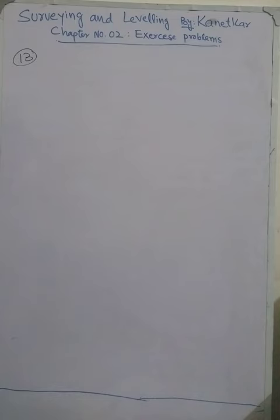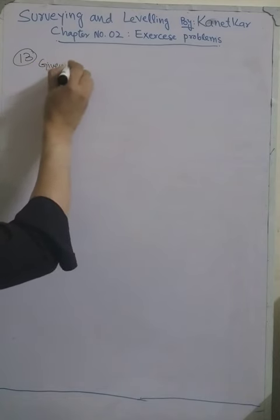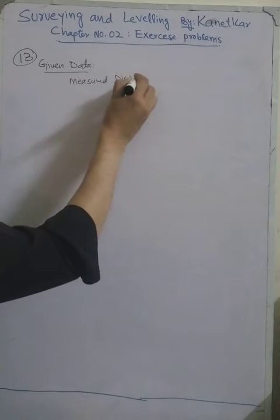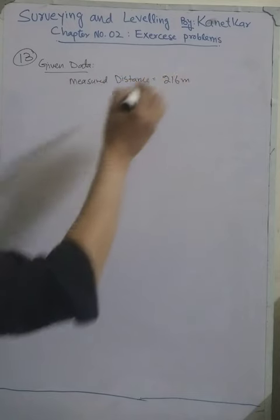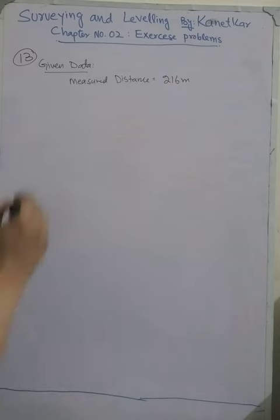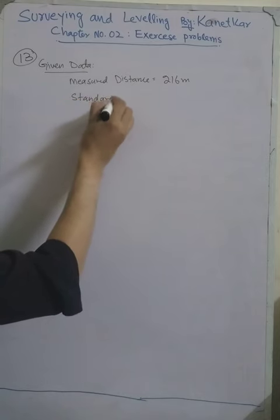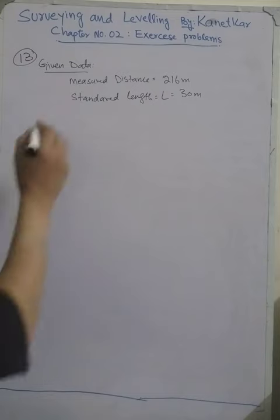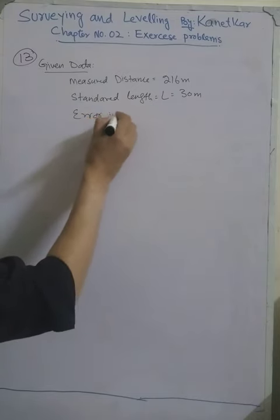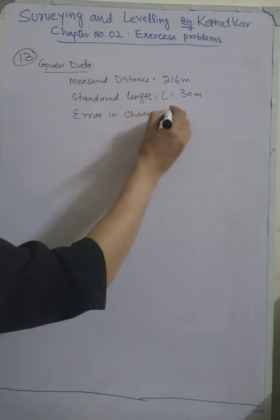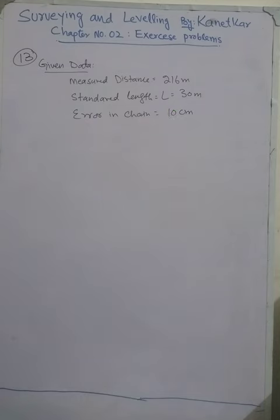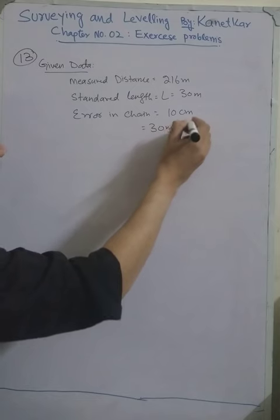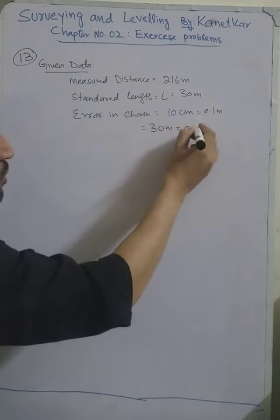Given data: the measured distance between two points was 216 meters, measured with a chain of standard length 30 meters. But during the measurement, the chain was 10 centimeters too long. This means the chain was not exactly 30 meters — its actual length during measurement was 30 meters plus 0.1 meters.